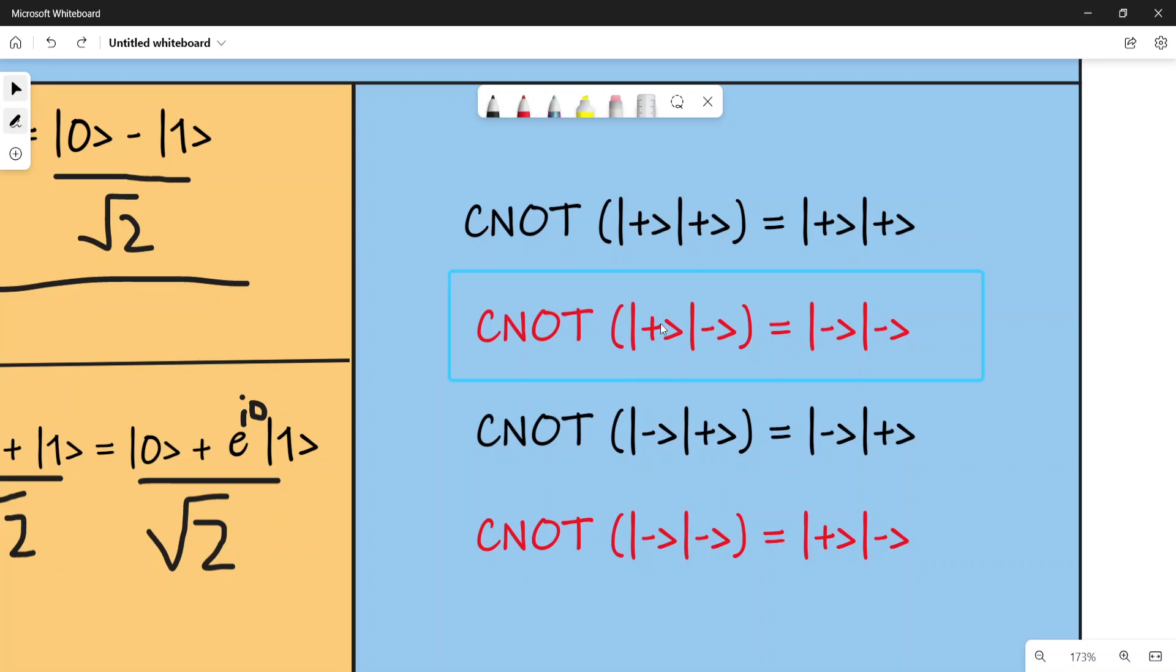You have two different qubits in different combinations of states, and then you apply the CNOT gate to get the corresponding result. Now consider these two operations that I have highlighted in red.